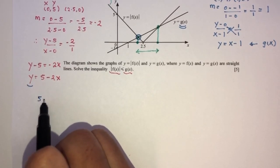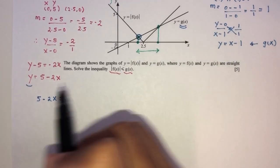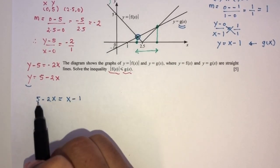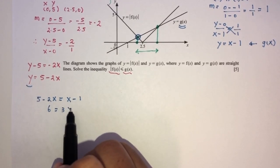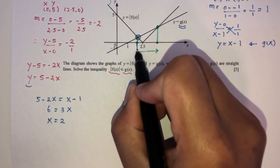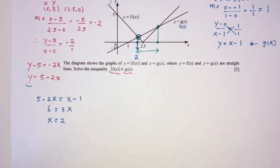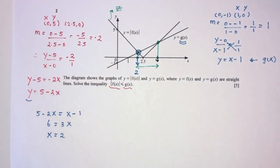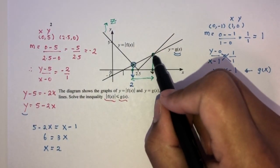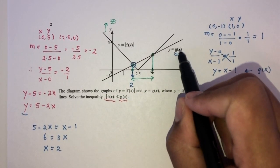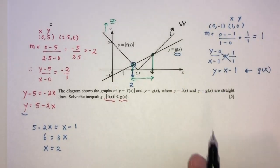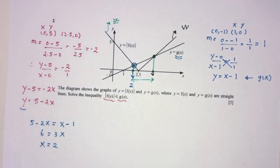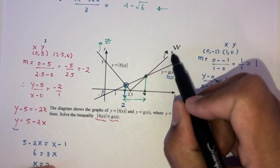So the value of x at this intersection point is 2. Now we need to find the other intersection point. I want to treat this part of the modulus graph — let's call it line w — separately. Because the modulus reflects the negative part upward, if line z has gradient −2, line w will have the same magnitude but positive gradient, so gradient = +2.